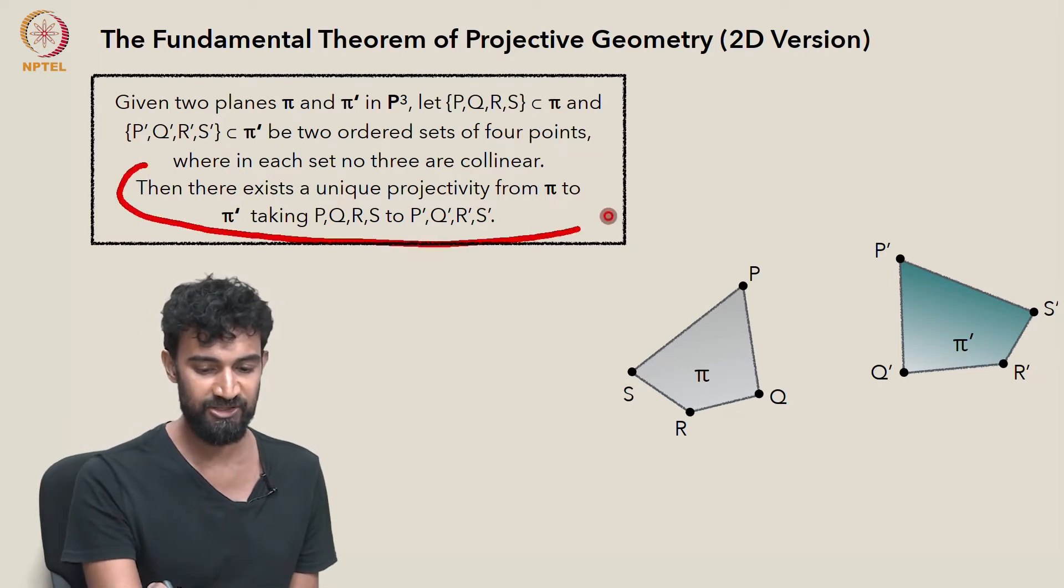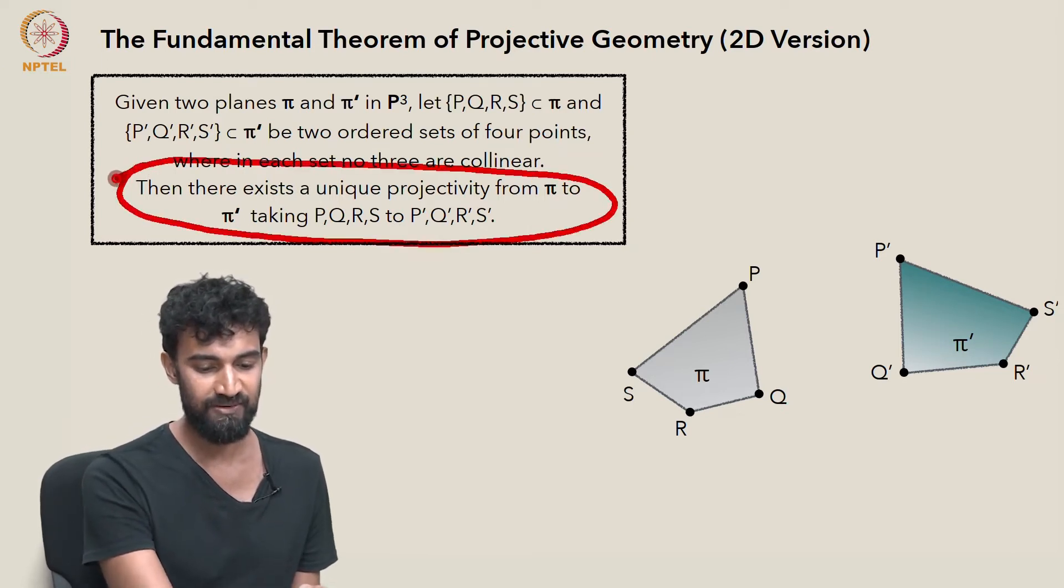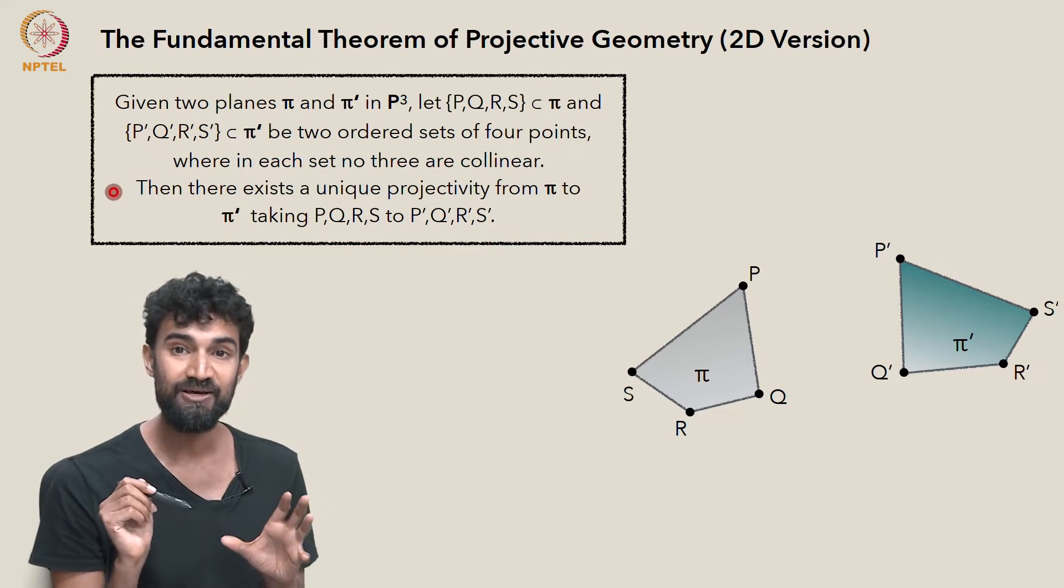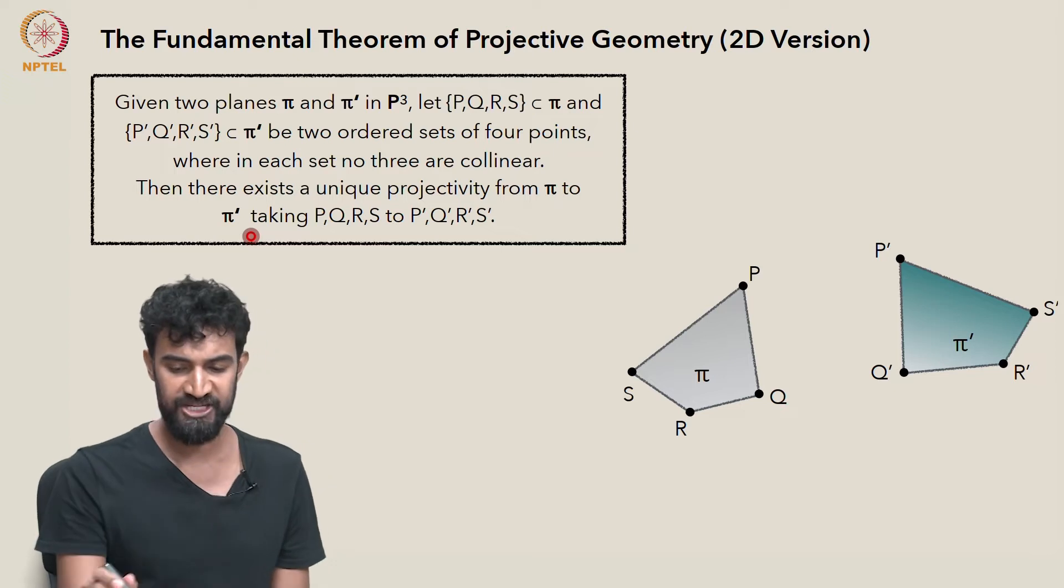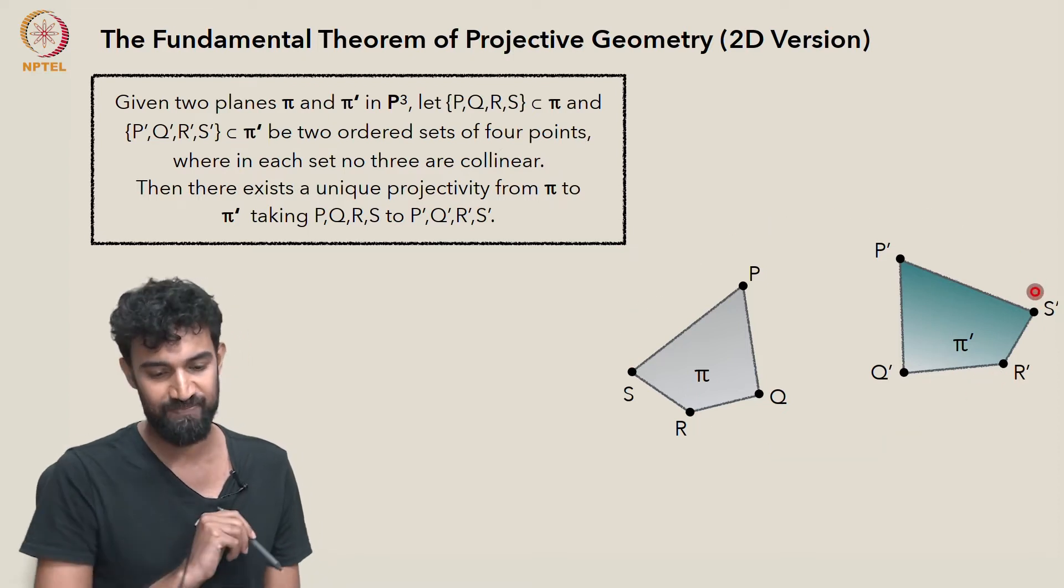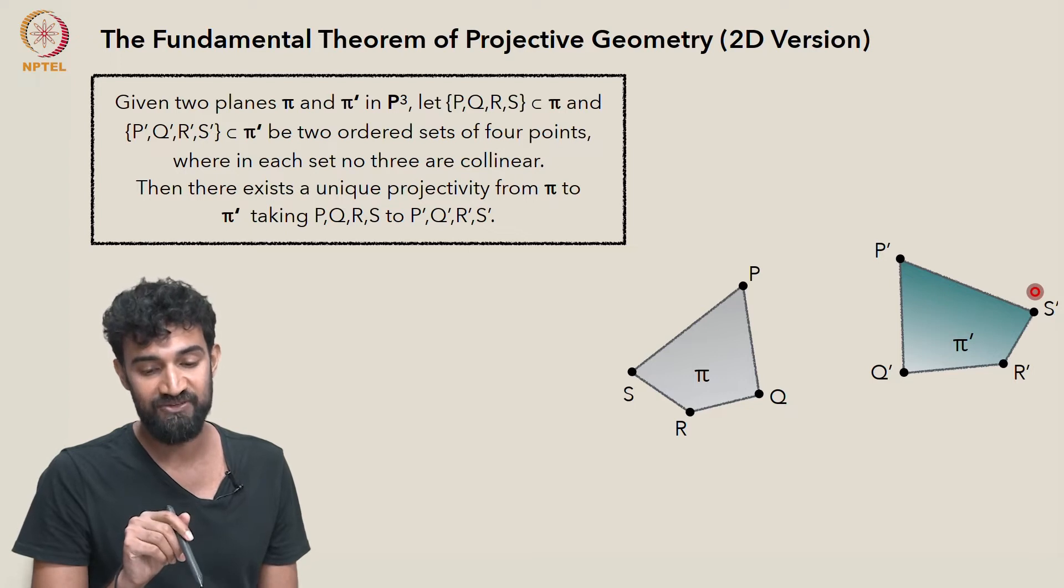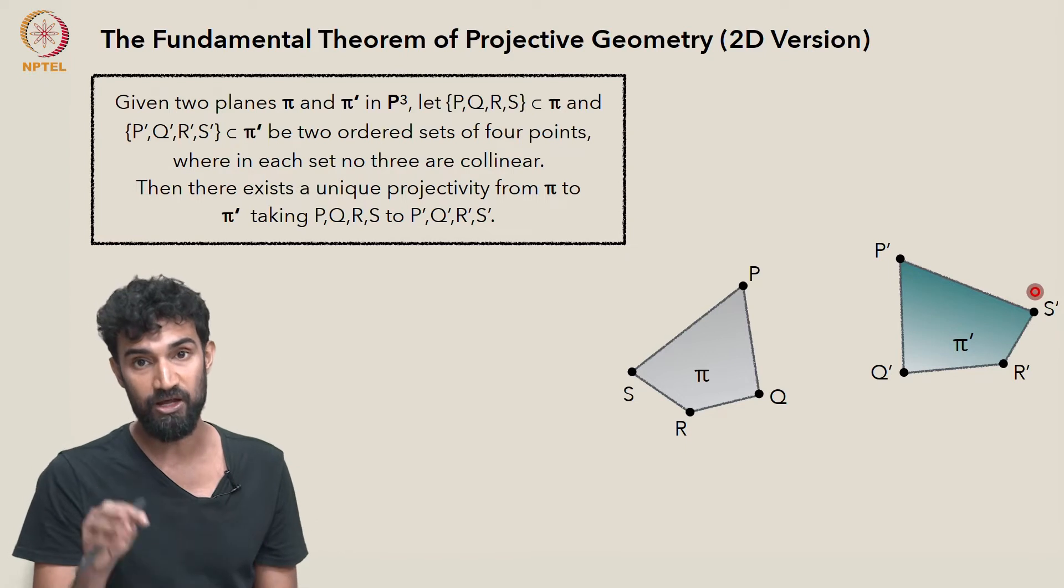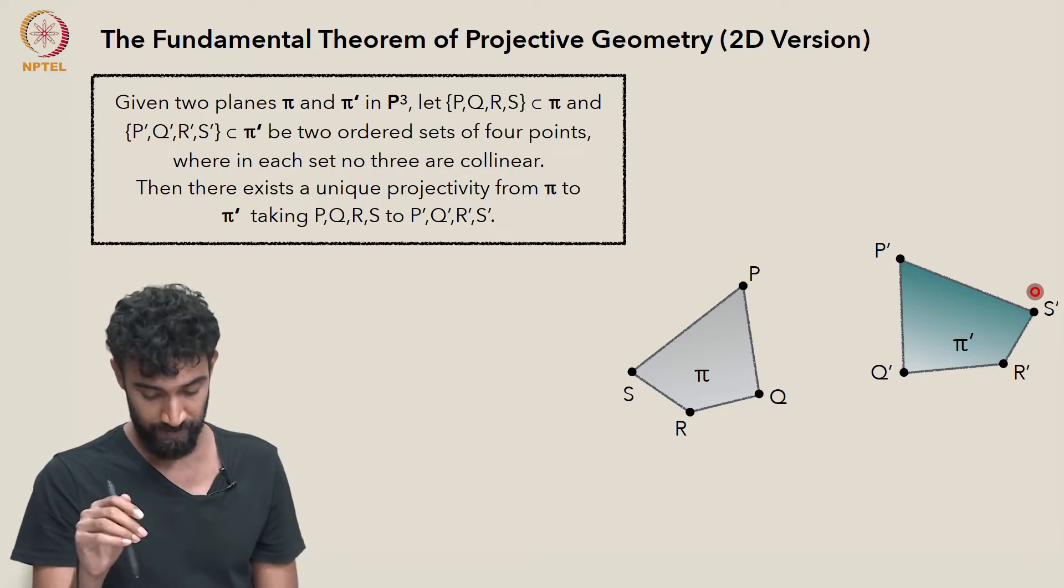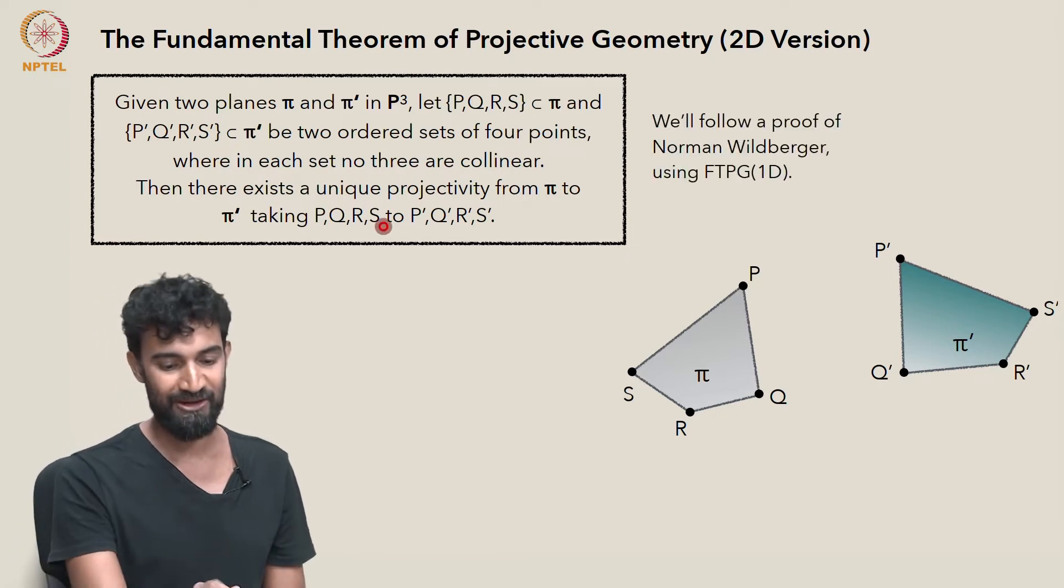In this situation, the fundamental theorem states that there exists a unique projectivity from π to π prime, which takes P to P prime, Q to Q prime, R to R prime, and S to S prime. There's a unique projectivity from π to π prime which maps these four points onto those four points in order. The order matters here.